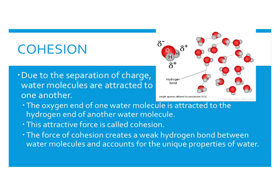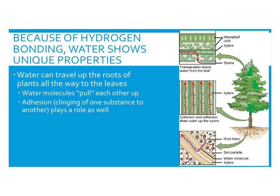Hydrogen bonding is what causes water to behave the way it does, and it's very important for life. Because of hydrogen bonding, water can travel up the roots of plants all the way to the leaves — the water molecules are sticking together. Water in the soil is pulled along by other water already in the roots, and more water is pulled up into the roots. That water is pulled up the stem through specialized tubes in the trunk of the tree called xylem, and then pulled into the leaf through more xylem tubes within the leaf.